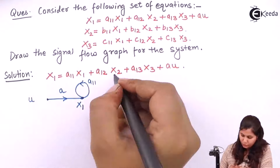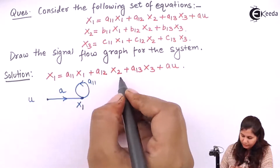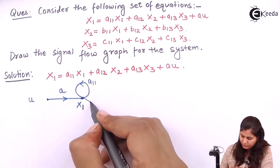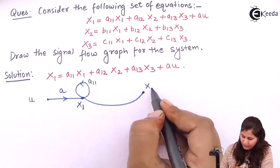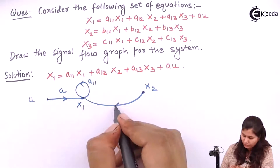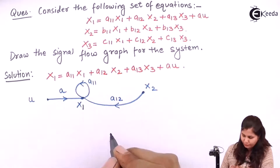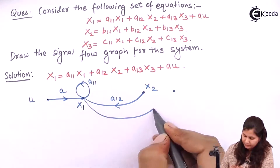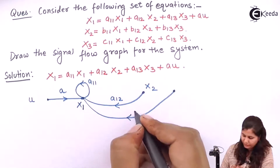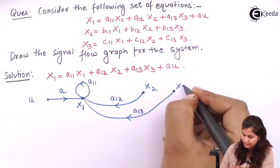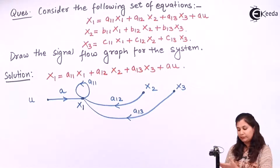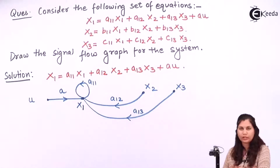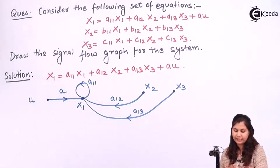x2 is also given to x1 and it acts as a summing point, so we have node x2 with transmittance a12 written over the arrow. x3 is also a node, multiplied with a13, so we write transmittance a13. We have now drawn the signal flow graph for the first equation.